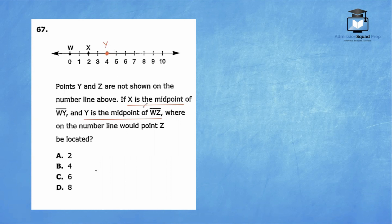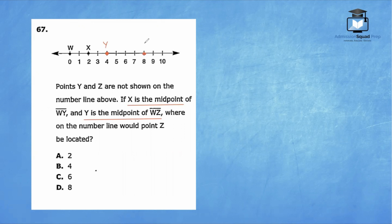Y is the midpoint of WZ. The distance from W to Y is four, so the distance from Y to Z is also four. We position point Z four units past Y. Point Z is now at position 8 on the number line. So D is the correct answer.